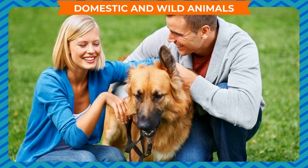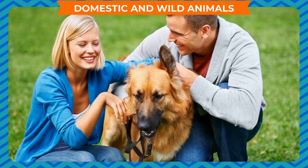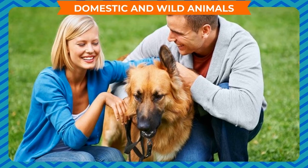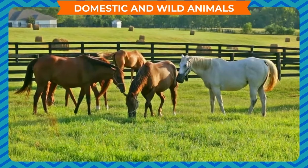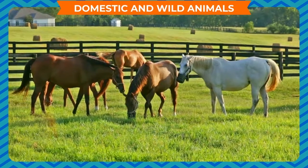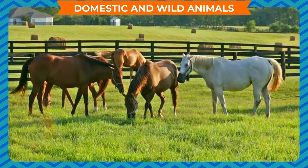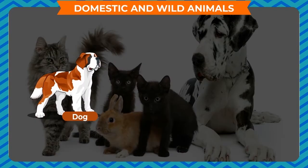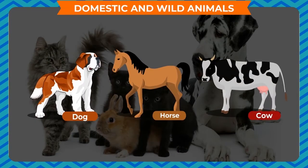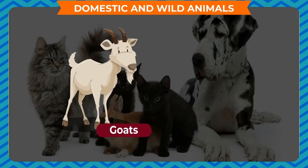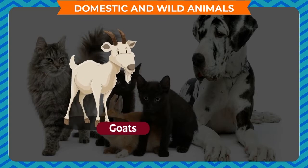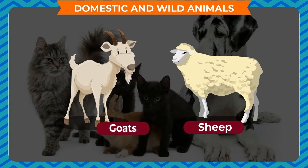Some of these animals live with us at our homes and farms. Animals such as dogs, horses, cows, goats, sheep, etc. live close to us and are known as domestic animals.